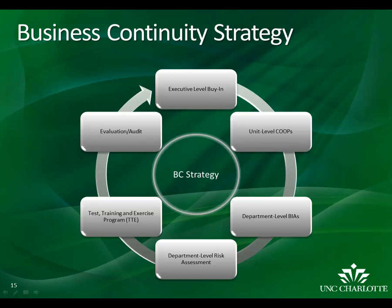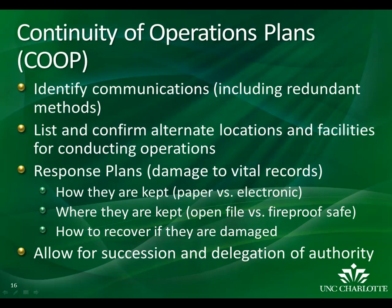So what information is contained within a COOP? In the COOP, we identify communications, list and confirm alternate locations, list our response plans, list our dependencies, and we allow for succession and delegation of authority. The Continuity Operations Plan is a grassroots project. We do this at the lowest possible department or business unit level within the hierarchy of an organization.